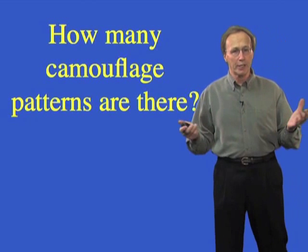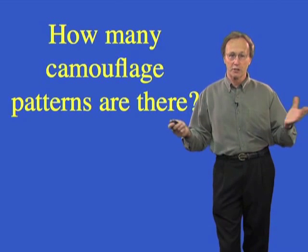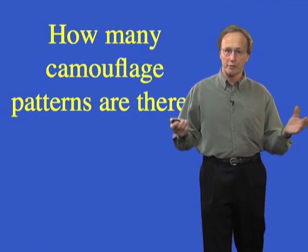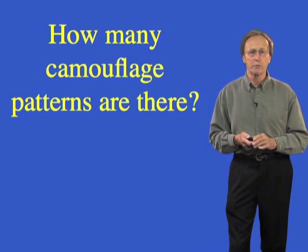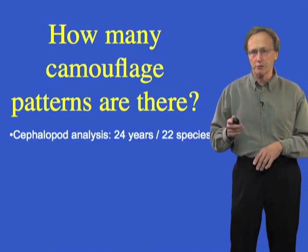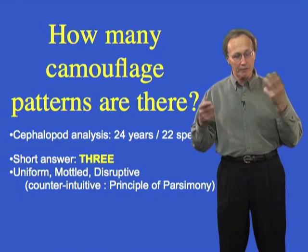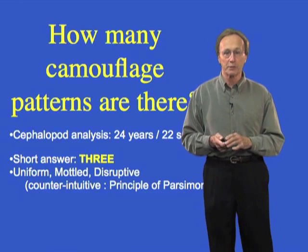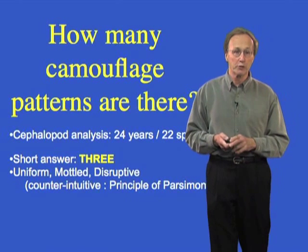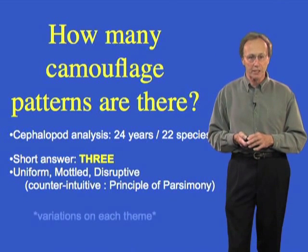Let me go back to zoology for a moment and ask a really rudimentary question: how many camouflage patterns do you think there are? Not just in an octopus or a fish, but any animal whatsoever. This is a question that's hardly been asked before, but in our case we've been studying the cephalopods for a long time, and the short answer, we think, is three — not 50, 500, or 5,000, which are answers I typically get. This is a very unusual, counterintuitive answer, and it's up to me to give some data to prove that concept.